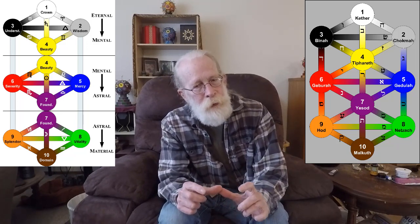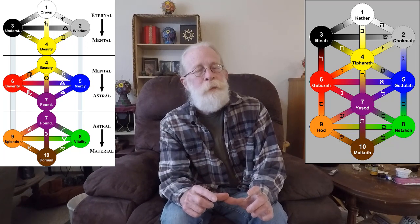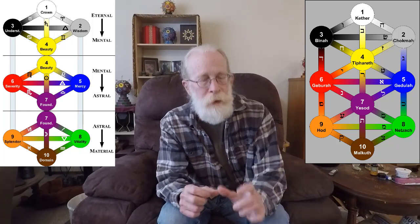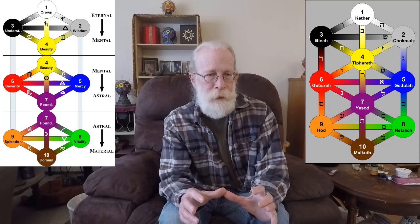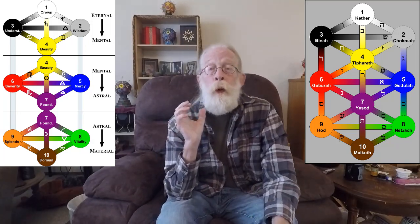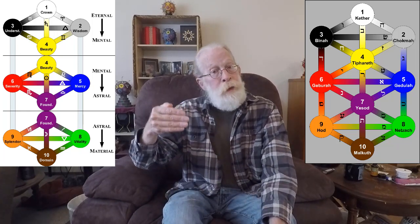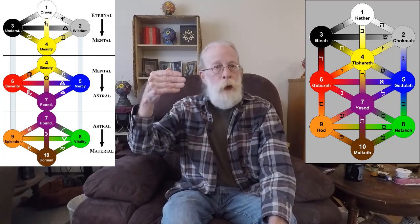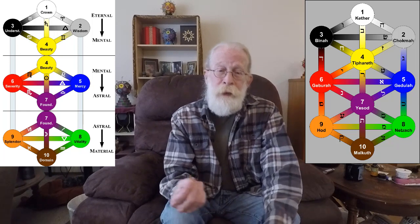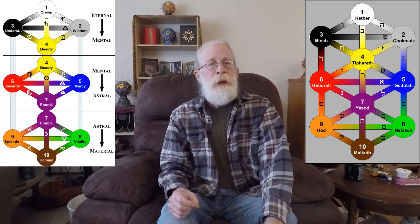That is how these zodiacal paths are separated — not by season, which would be three signs per season, but by division of the year into three parts, corresponding to or surrounding each of the mother letters. This is a quadrangular division of the tree that divides it into those three realms of the mother letters, and it really defines the archetypal relationships between the four sephirot of each quadrangle.